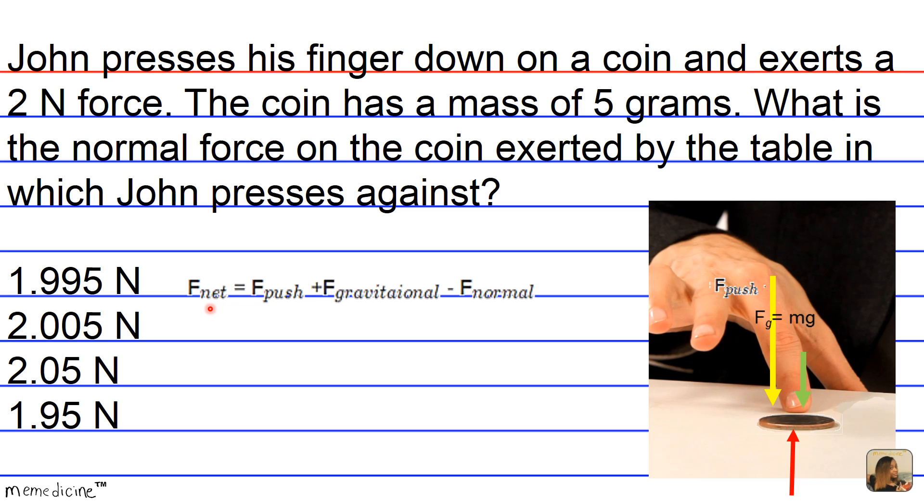So the first thing that we need to keep in mind is that we're going to have to convert the mass of the coin into kilograms. So we're given an amount of five grams, and if you divide that by a thousand, we get a mass of 0.005 kilograms.